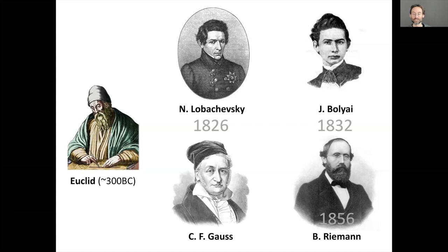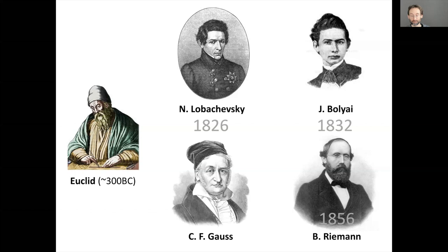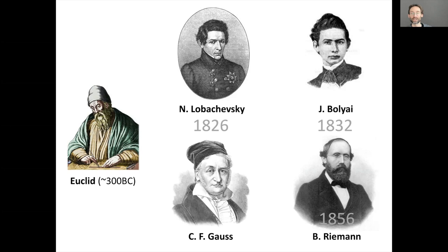Gauss entertained himself with these constructions even though he never published them. Then in 1856, Riemann — Gauss's student — published what we now call Riemannian geometry. Very quickly, these different types of geometry became siloed and completely disjoined from each other, and there was a big fight among mathematicians about whose geometry was better and what actually defines geometry.